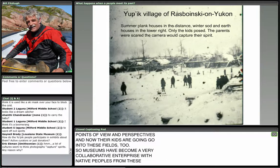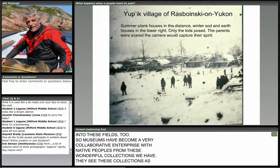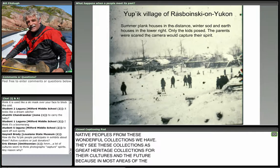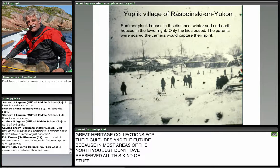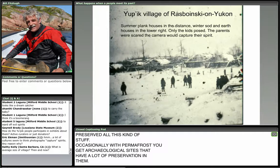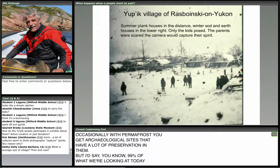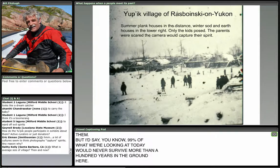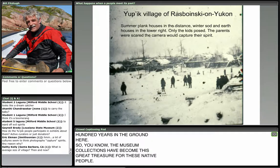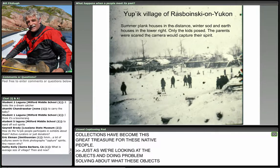Native people see these collections as great heritage for their cultures in the future, because in most areas of the north you just don't have preserved material like this — maybe 99% of what we're looking at today would never survive more than 100 years in the ground. The museum collections have become a great treasure for these native people. Have you found the Yupik people participating in the exhibit to also be stumped by the objects sometimes? Oh yes, because these objects are 120 years old. Shortly after Nelson collected them, missionaries came into their territory and people very quickly shifted to various denominations — Catholic, Protestant, Orthodox.